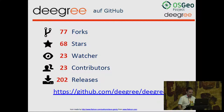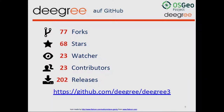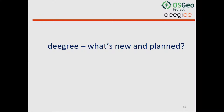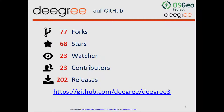Here are some statistics about the Degree GitHub repository. There are 77 forks, 68 stars, and 23 watchers — quite a lot of people are interested in Degree. There are also 23 committers, and 202 releases have been created on GitHub. Many people are watching this project, and as you can see from the 202 releases, there are many releases also in recent times. Those releases include bug fix releases, including very small ones.